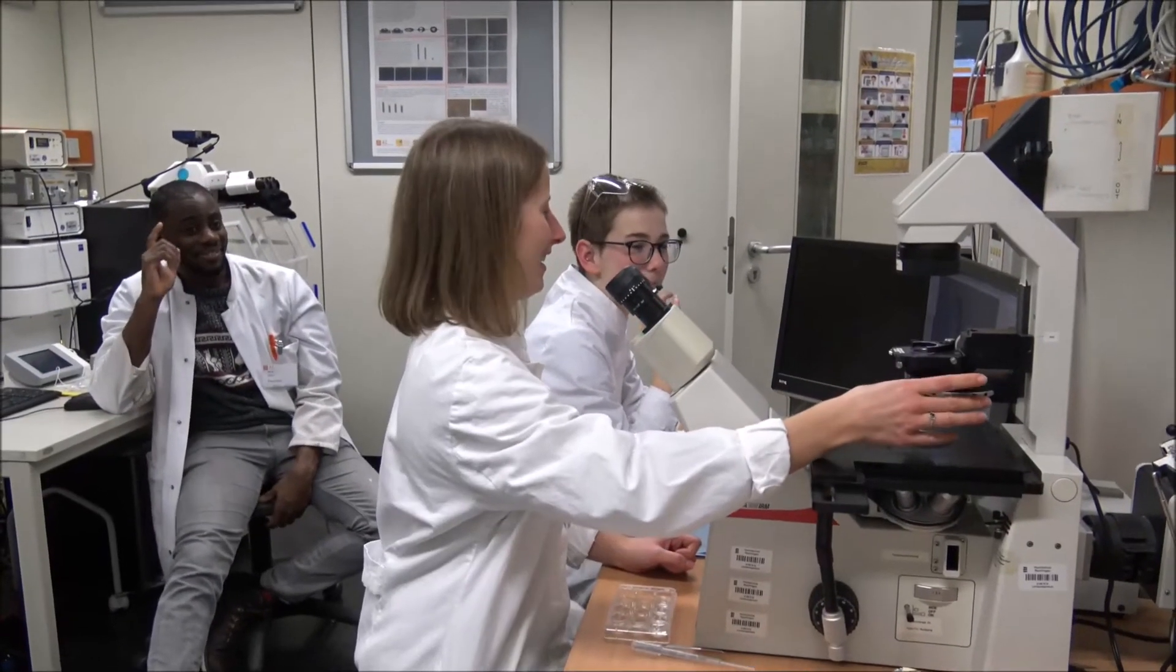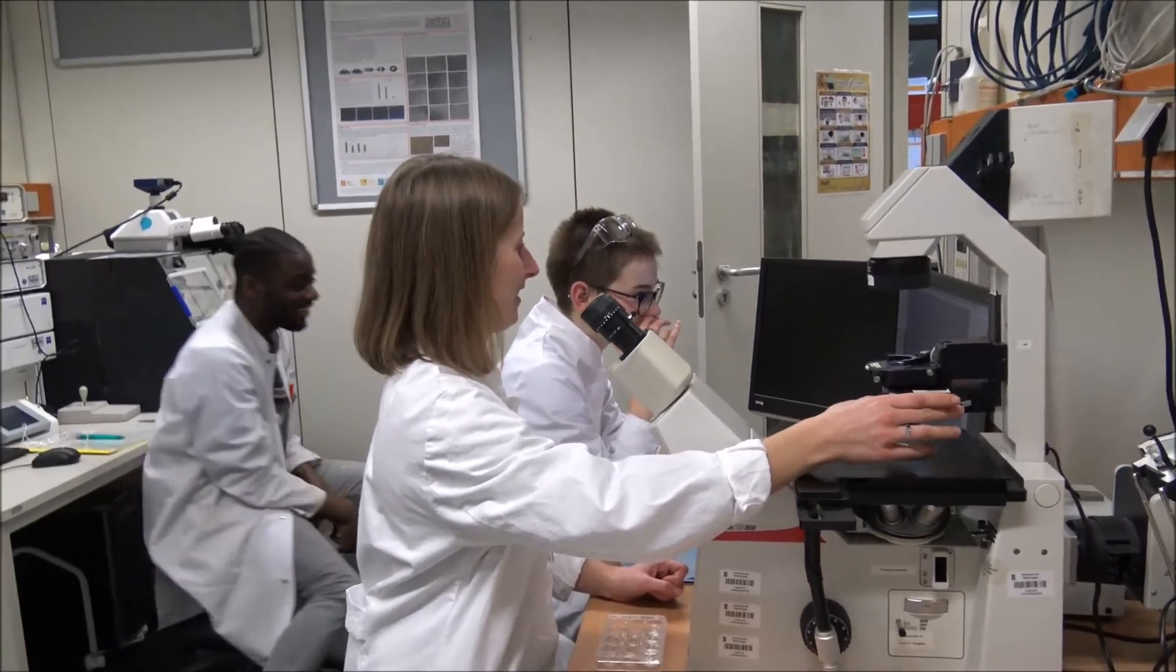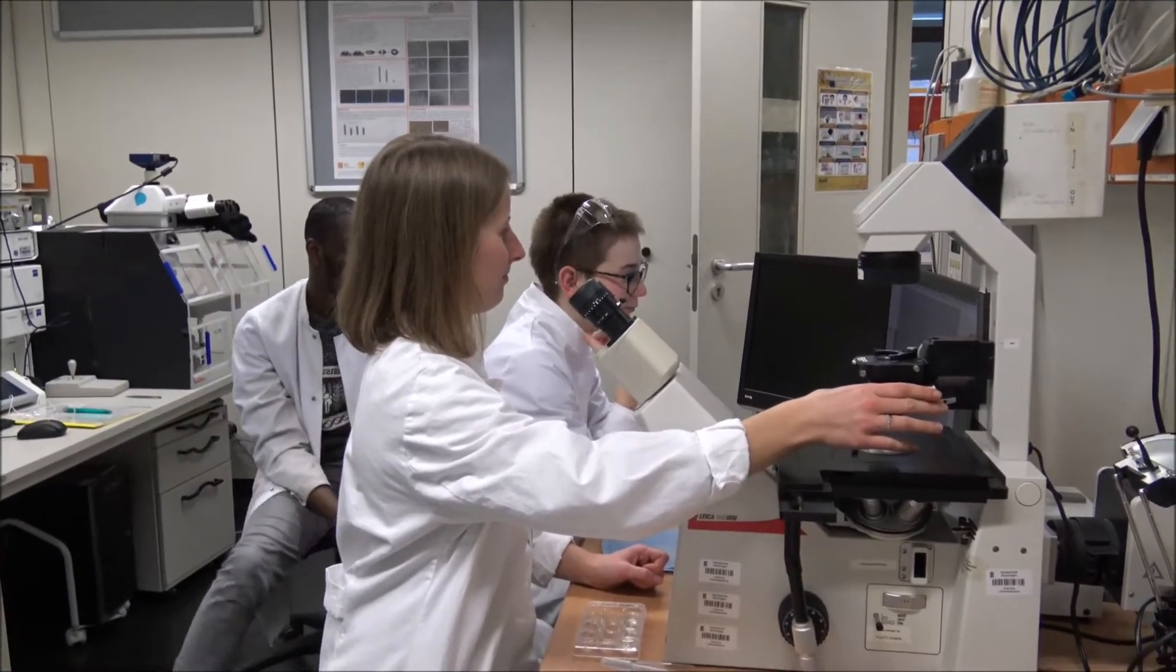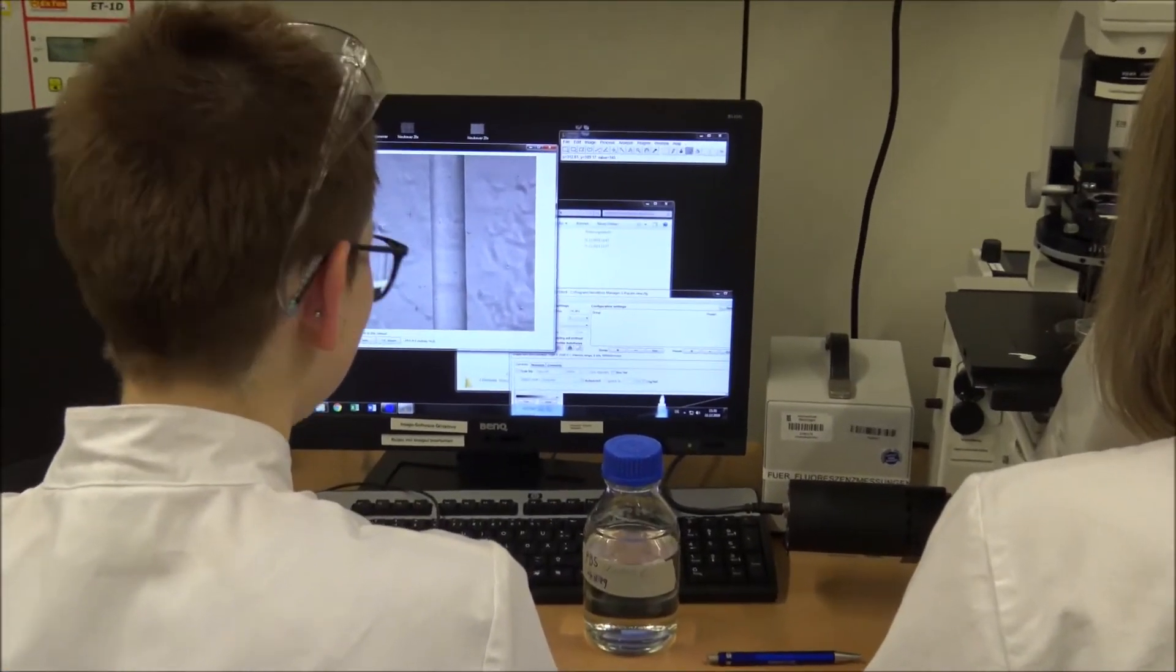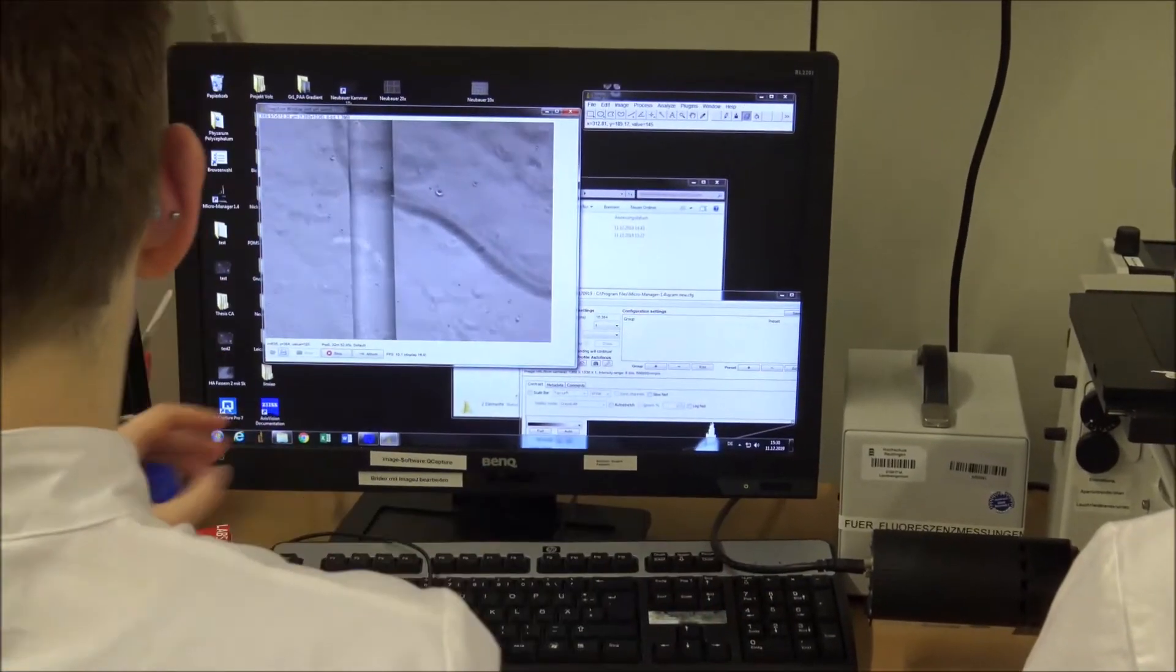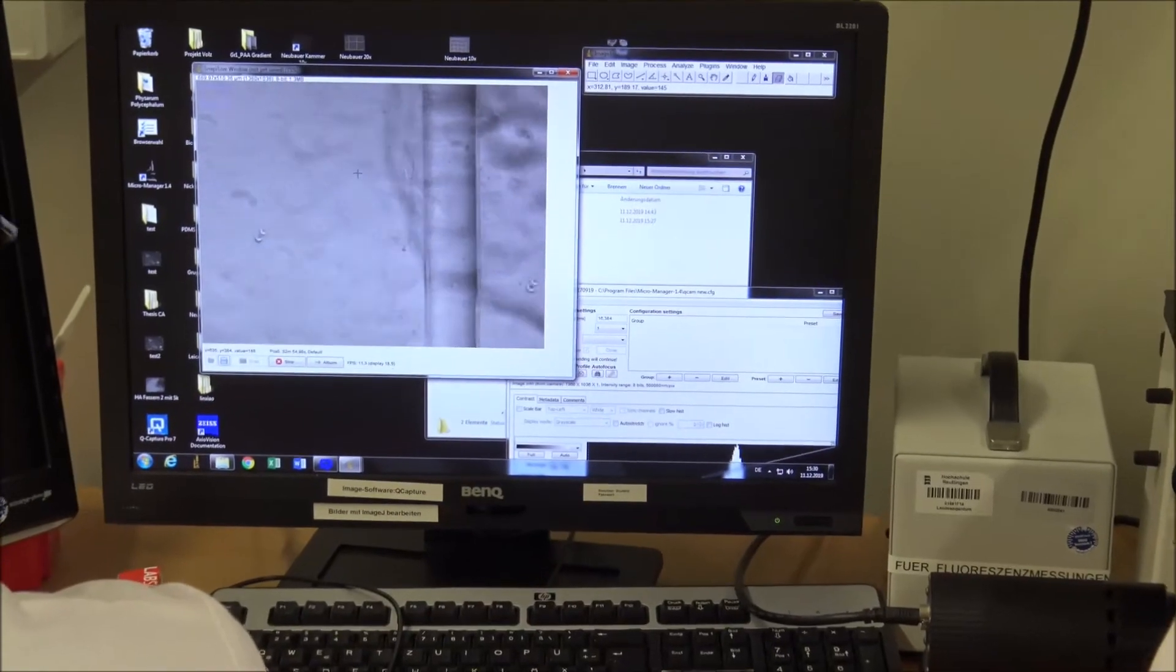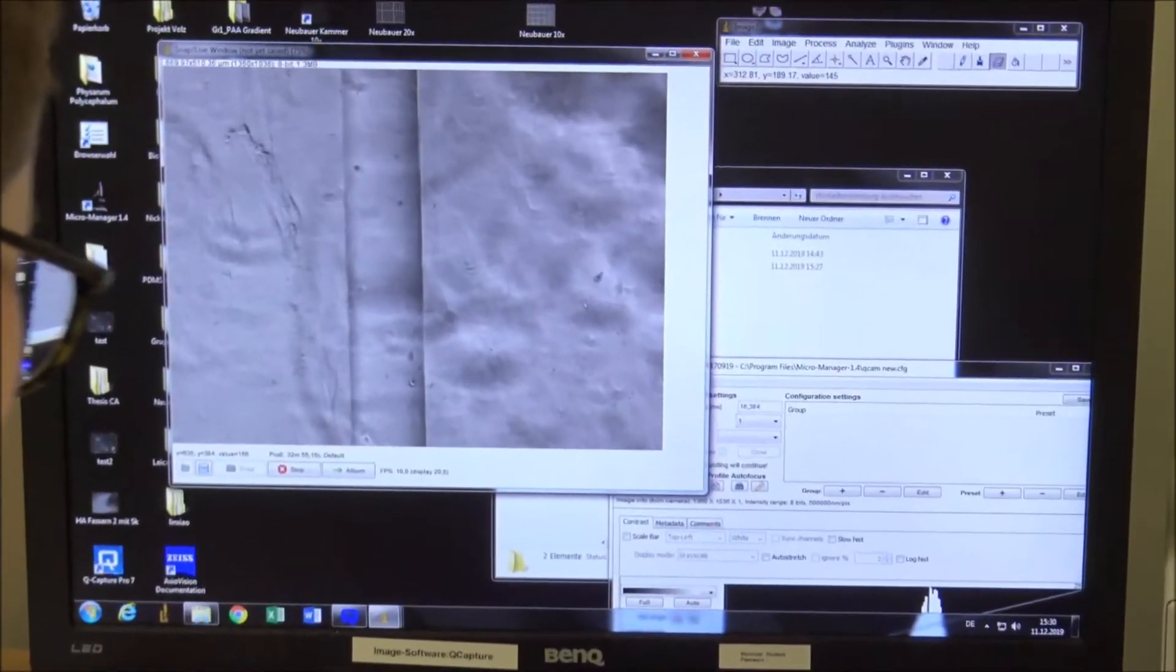After one, three, and five days the cells were fixed to take microscopic pictures in phase contrast. To investigate the influence of the curvature radii on the cell orientation, the angle of the cells to the curvature was measured.